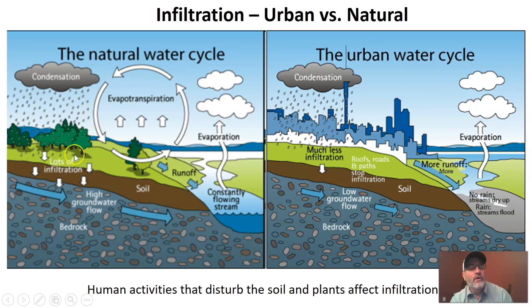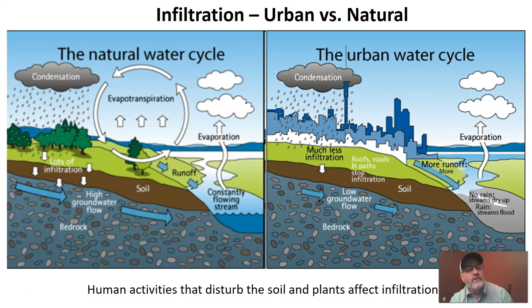In a natural area like a forest, we're going to have soil and lots of plant cover — like grass and trees. Plants, trees, and that soil are going to be permeable; they allow water to pass through. The grass and plants actually slow the water down, giving it more time to be infiltrated — to pass into the soil. As a result, you're not going to have a lot of runoff. You'll have some runoff making its way into streams, but a lot of water will pass into the ground.